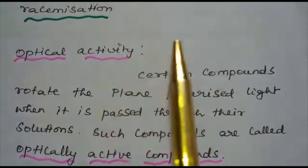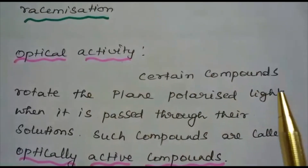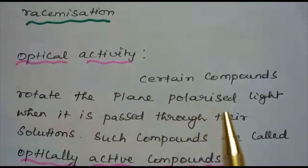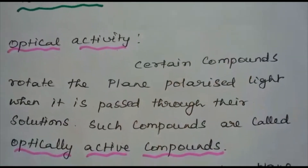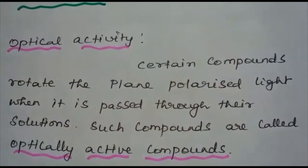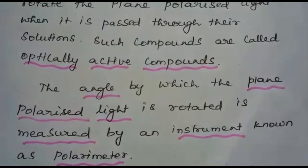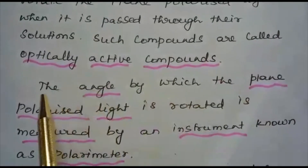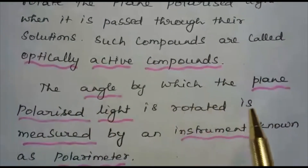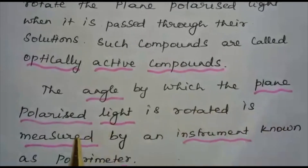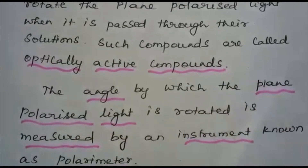Certain compounds rotate the plane polarized light when it is passed through their solutions. Such compounds are called optically active compounds. The angle by which the plane polarized light is rotated is measured by an instrument known as a polarimeter.